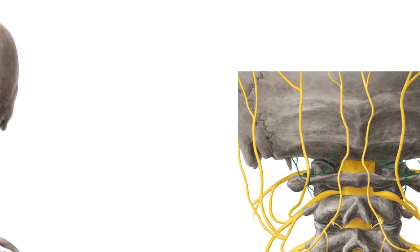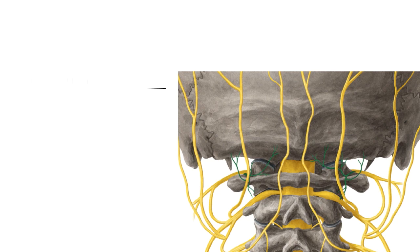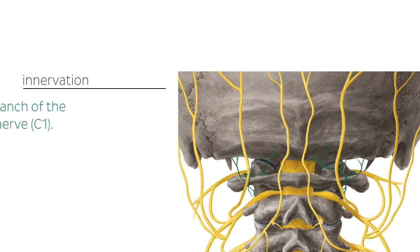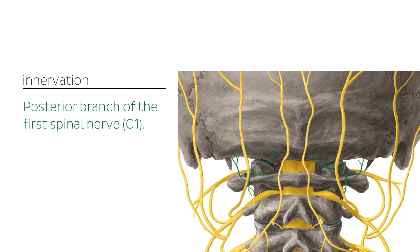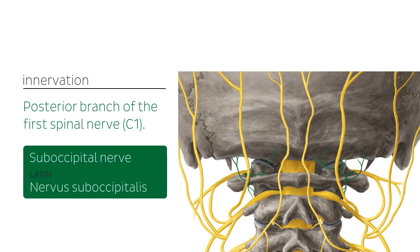Before we talk about these muscles, I want to make a clear point that the innervation of all four muscles will be provided by the nerves highlighted in green on this image. These are known as the posterior branches of the first spinal nerve, and keep in mind we're looking at a posterior view of the suboccipital region. These nerves are the suboccipital nerves.